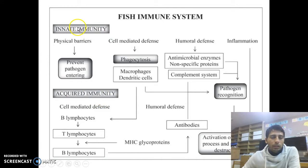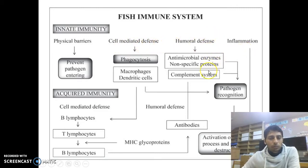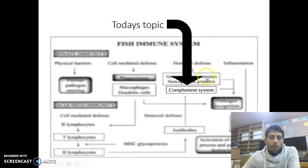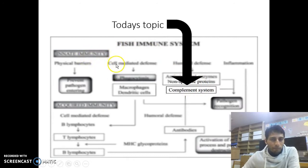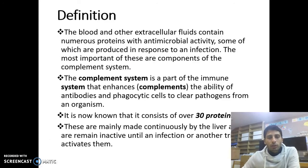On innate immunity we can see some characteristics: physical barriers, cell-mediated defense, humoral defense, and so on. Today we will not discuss all of these things. We will discuss only about the complement system, which is part of innate immunity. So let's see the definition of the complement system.